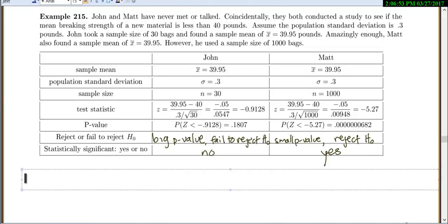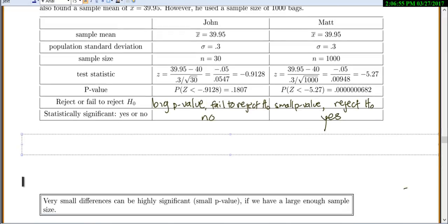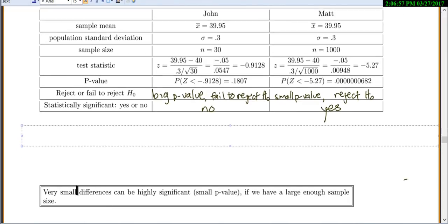So, we'll just make ourselves a little note that even very, very small differences. So, it was from 40 pounds to 39.95. So, we're off 0.05 pounds. Very small differences can be very significant. You can have a very small p-value if you have a large enough sample size. So, the bigger sample size, the smaller the p-value will always be.